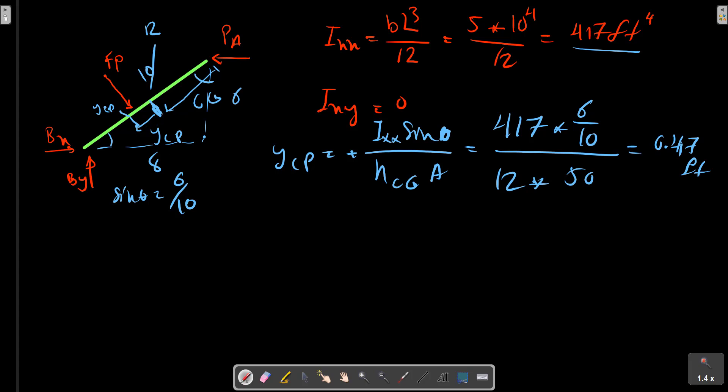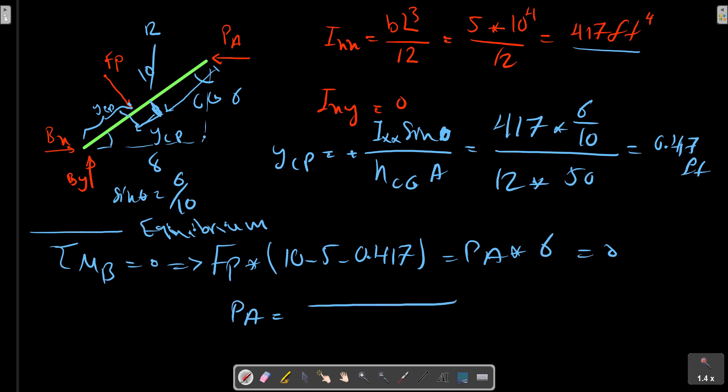So we now having this distance for calculating Pa. Moment about B equals to zero equilibrium. So Fp multiply by 10 minus 5 minus 5, this is the distance, should be equals to Pa multiply by 6 plus 2, equals to 0. So Pa equals to on 6.